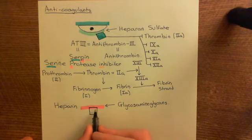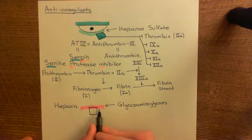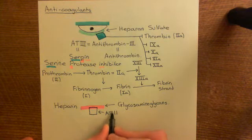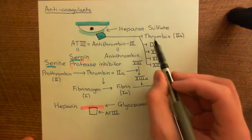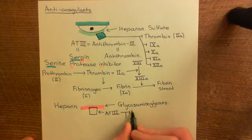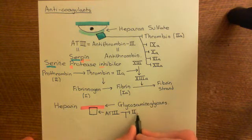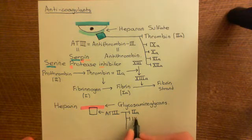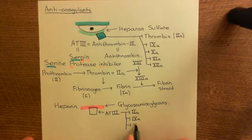If you give someone heparin, it will go into their blood and bind to antithrombin-III from the liver — AT3. It will then activate that antithrombin-III. This will inactivate all of the serine proteases we've seen: it will inhibit 2a (the shorthand for thrombin), 9a, 10a, 11a, and 12a.